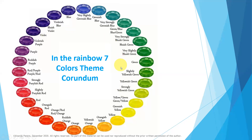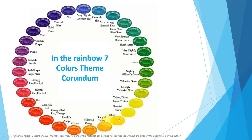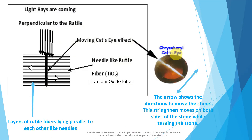All the corundum colors are there. Green, very slightly bluish green, bluish green, very strong bluish green, green blue, very strongly greenish blue, greenish blue — there are a lot of names written here. You can visit this without my help, because all the colors are given: green, blue, violet, red, orange, yellow, indigo, violet. All 7 colors are there.